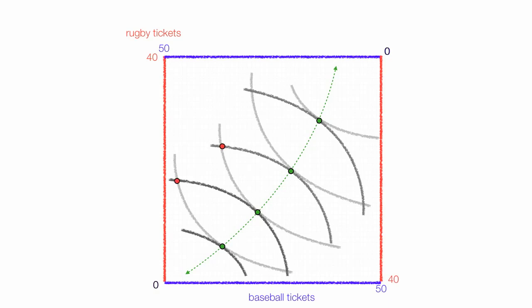They could exchange at the red dots, but we would consider that inefficient exchange and I'll explain that in a second. Why that's considered inefficient exchange.